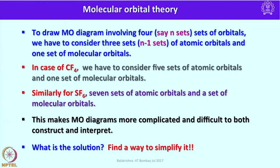For sulfur hexafluoride, we have to consider seven sets of atomic orbitals — six from fluorine atoms and one from sulfur — to generate one set of molecular orbitals. This makes MO diagrams much more complicated and difficult to both construct and interpret. The solution is to simplify it by resolving the MO description for a polyatomic molecule into a three-component problem using a method known as ligand group orbitals.